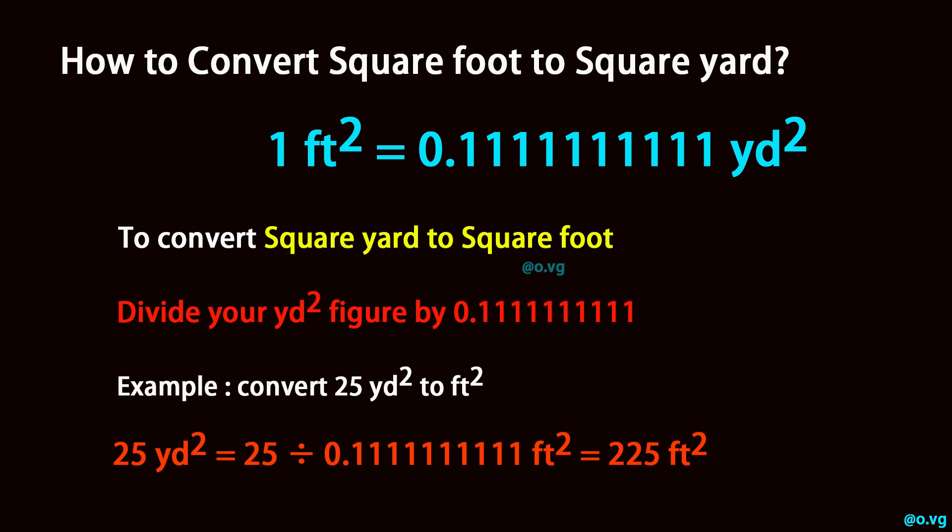Convert 25 square yard to square foot. 25 square yard equals 25 divided by 0.11111111111, which equals 225 square foot.